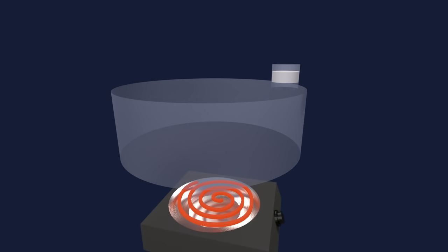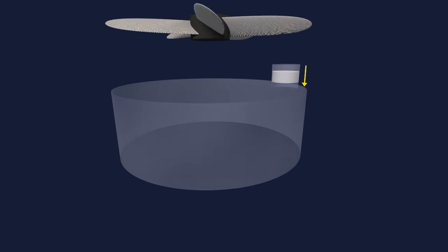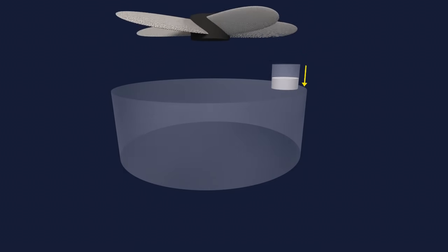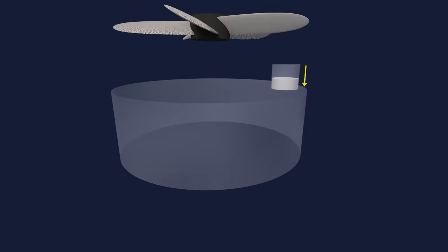If we heat the cylinder, the air pressure will increase compared to the outside air pressure, pushing the piston up. If we cool the cylinder, the air pressure will decrease compared to the outside air pressure, pushing the piston down.